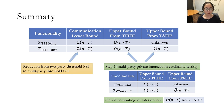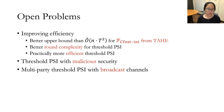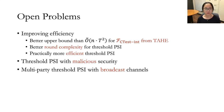To summarize, we formalize the problem of multi-party threshold PSI by two different functionalities and study its communication lower bound and upper bound. Finally, I want to mention a few open problems: Can we achieve a better upper bound for ctestint from TAHE? Can we achieve better round complexity and practically more efficient protocols for threshold PSI? Can we achieve threshold PSI with malicious security? And are there differences in networks with broadcast channels compared to point-to-point communication? Thank you for your attention.